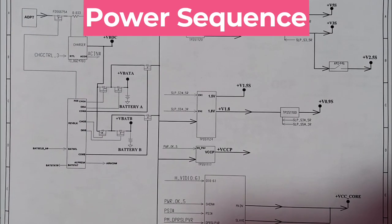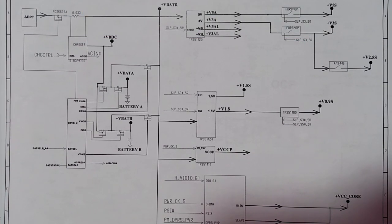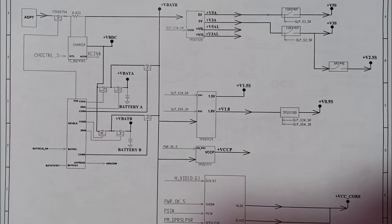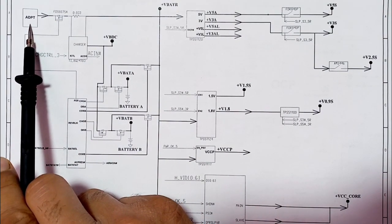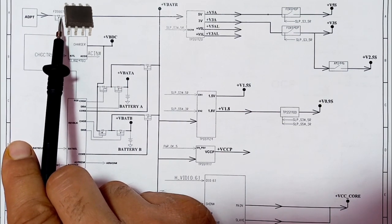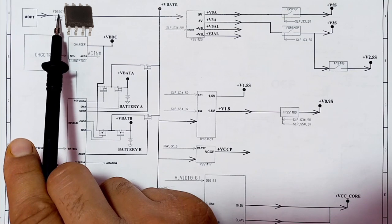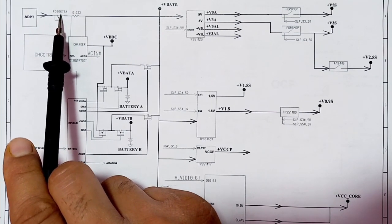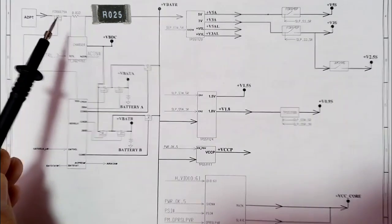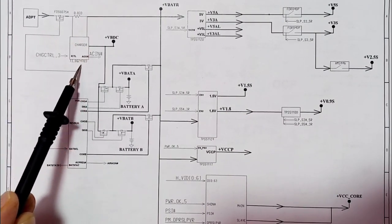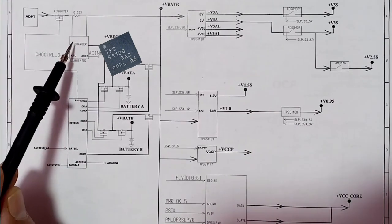The power sequence is basically one of the most important pages in every schematic that every engineer or technician should understand. It makes troubleshooting easier. Here we have the adapter, a power MOSFET or power switch with part number IFA66-75A, and a current sensor resistor which is always connected to the charge IC.